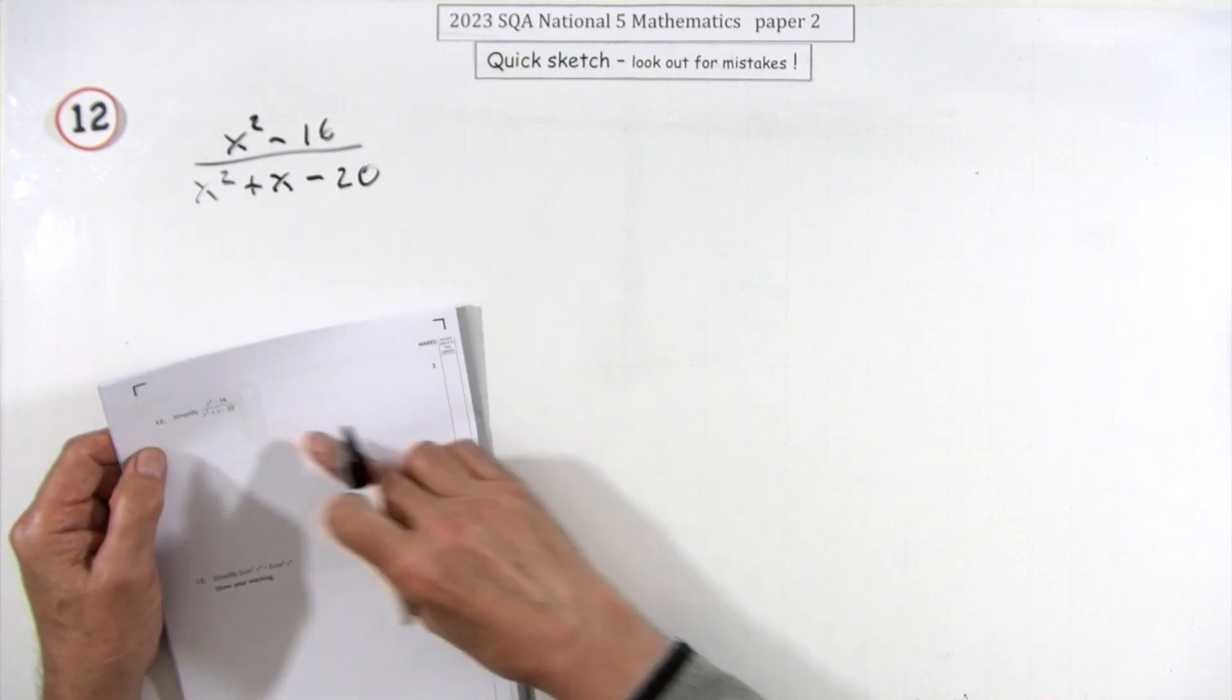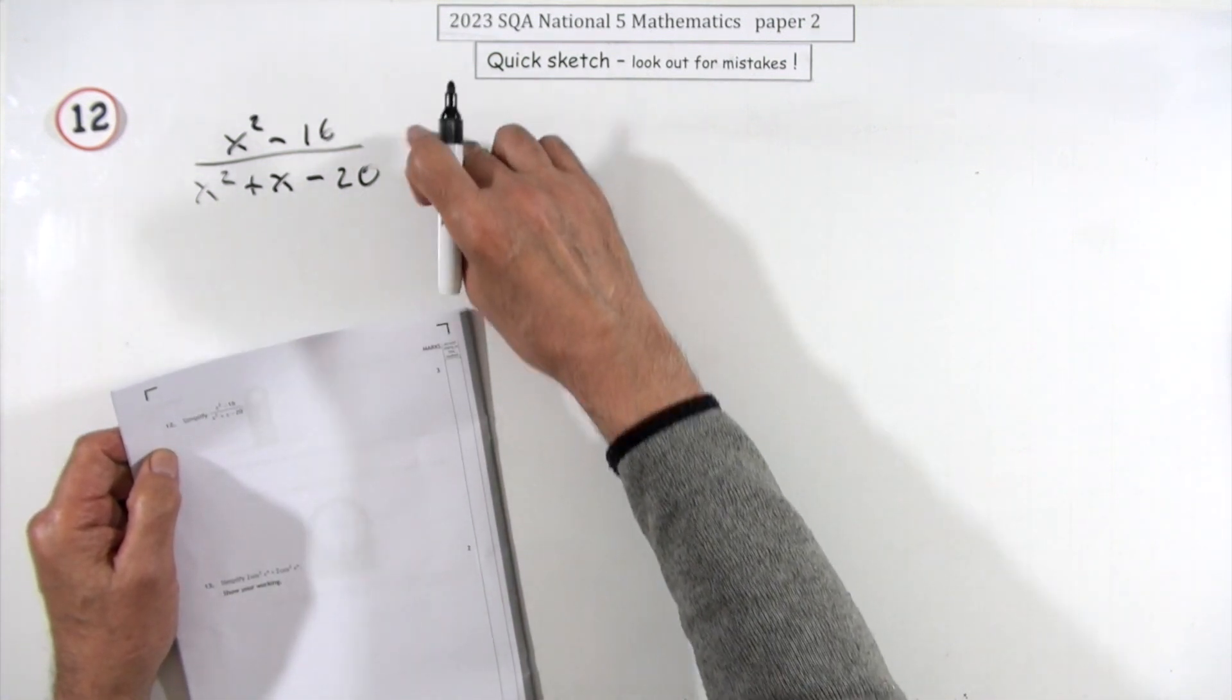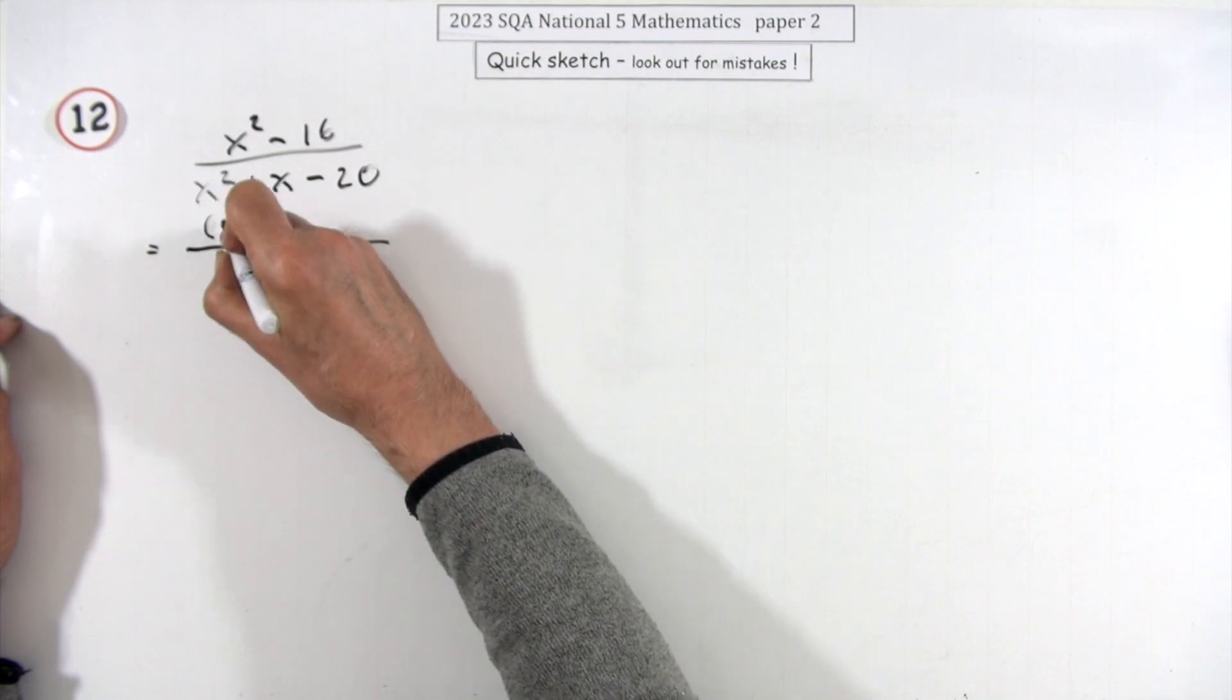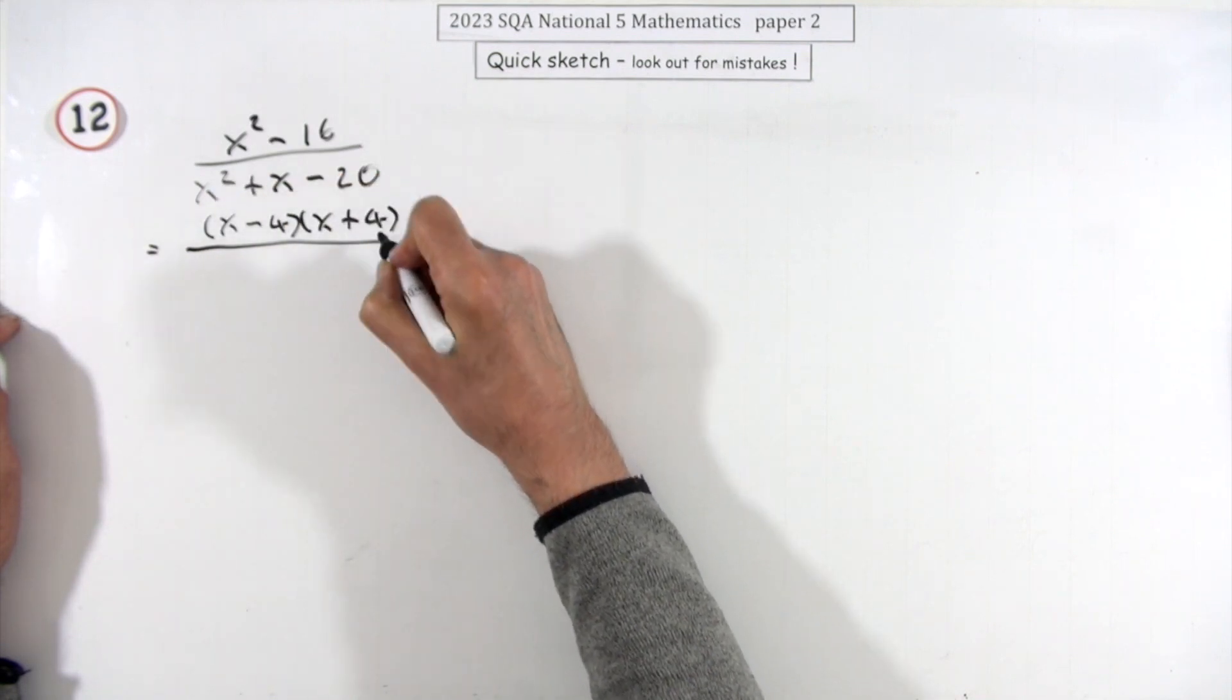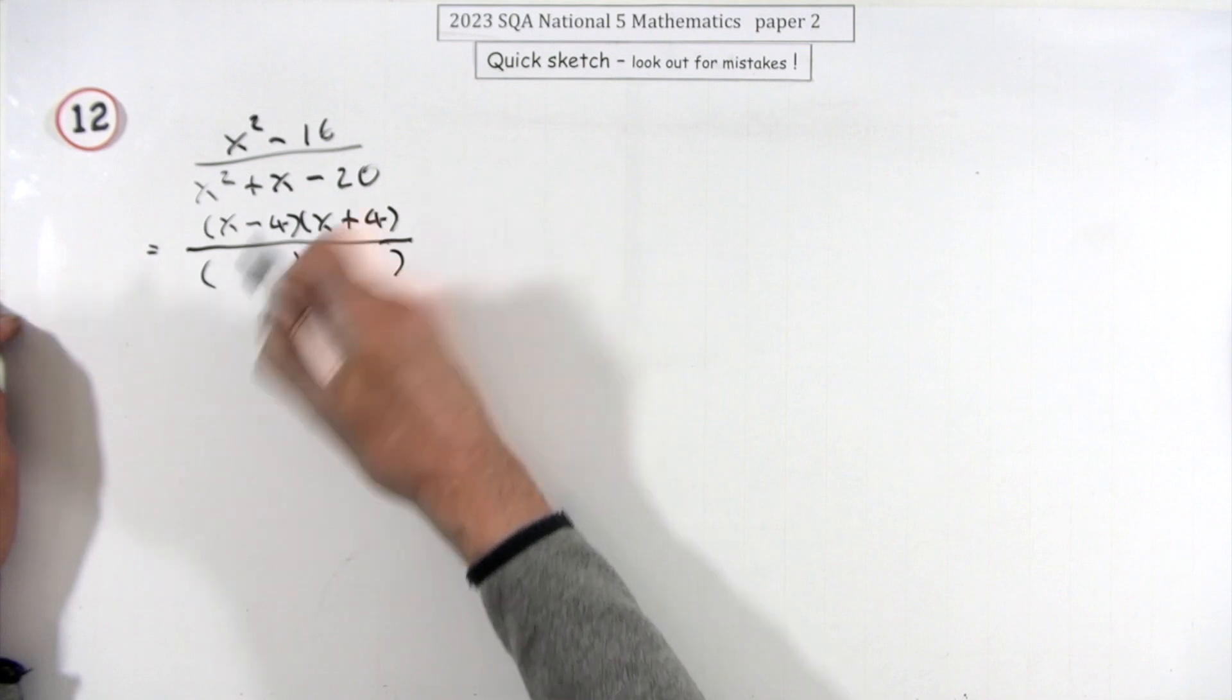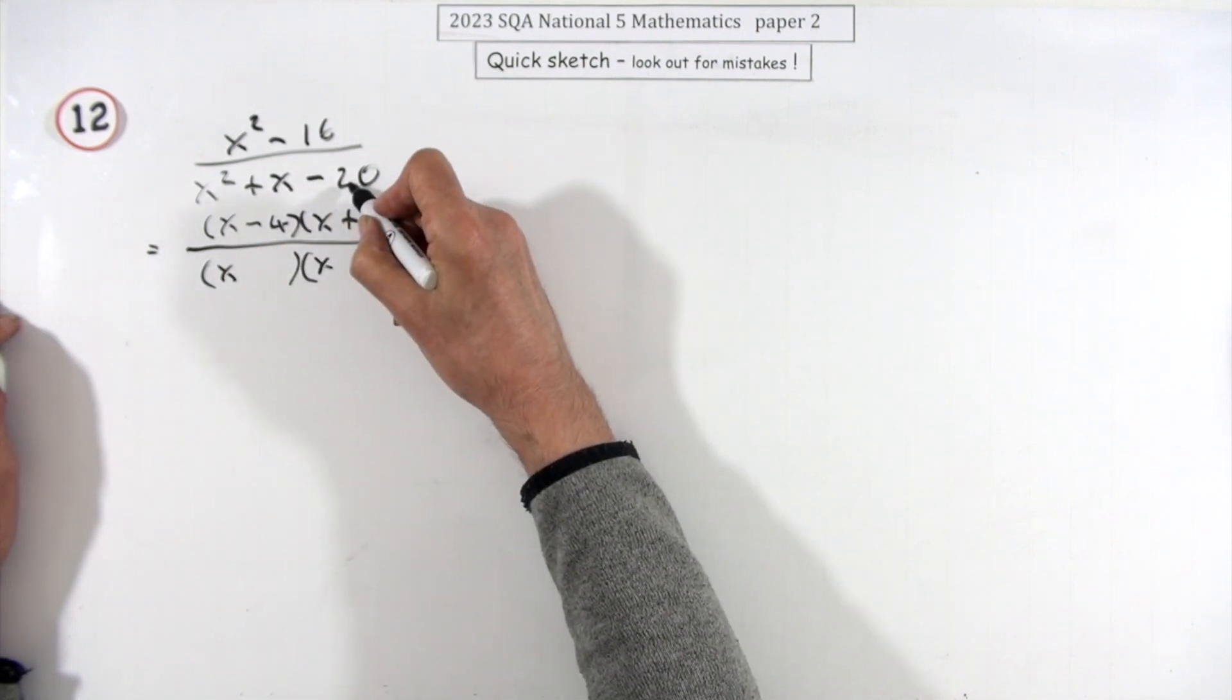Number 12, for 3 marks. Simplify this fraction. That means you'll be dividing the top and the bottom, so it needs to be factorized. What have you got? Difference of two squares, x minus 4, x plus 4. Quadratic, another pair of brackets. You know that one of them must be one of them for it to simplify. It'll be x times x, and that'll be a 4 and a 5.